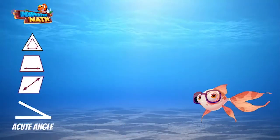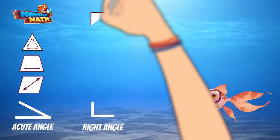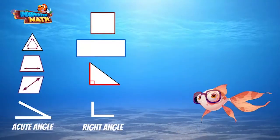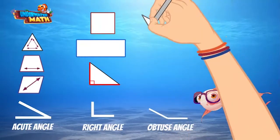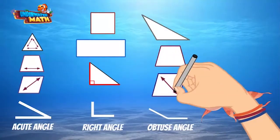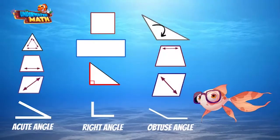Shapes such as acute triangles, trapezoids, and a rhombus have acute angles. Shapes like squares, rectangles, and right triangles have a right angle. Obtuse triangles have an obtuse angle, as do trapezoids and a rhombus. You will notice the trapezoid and rhombus have both acute and obtuse angles.